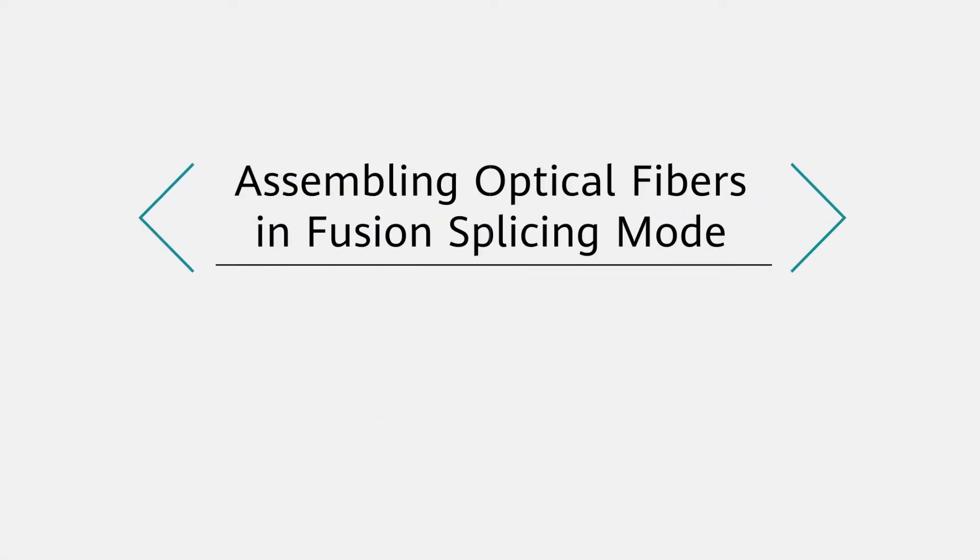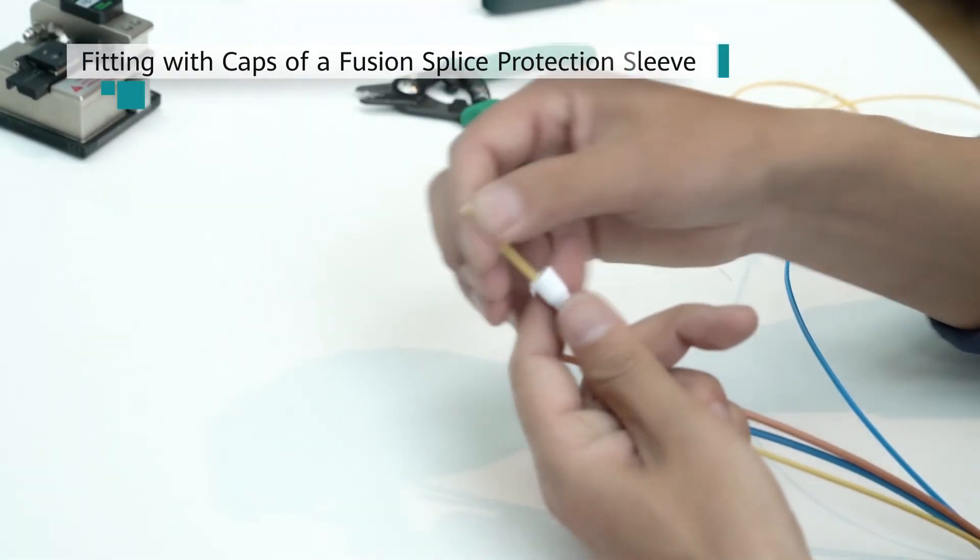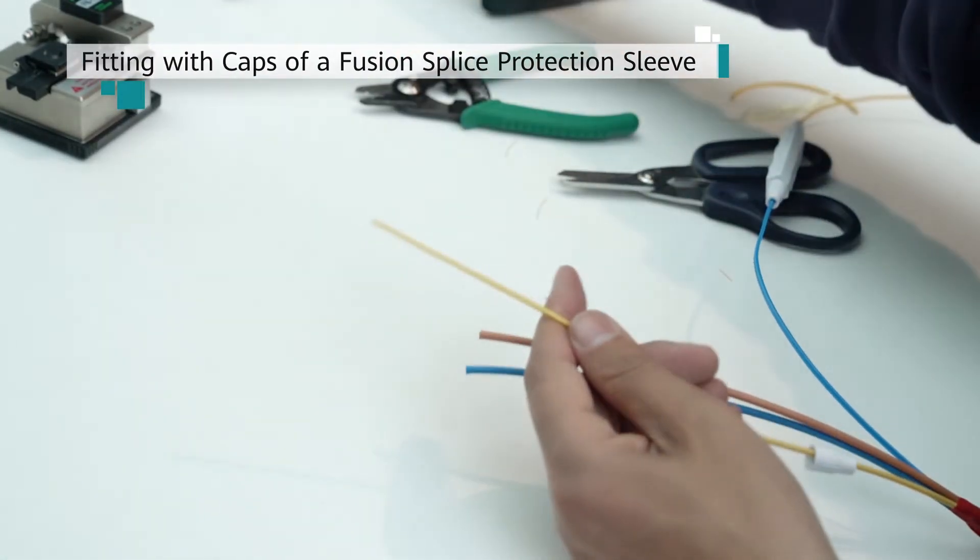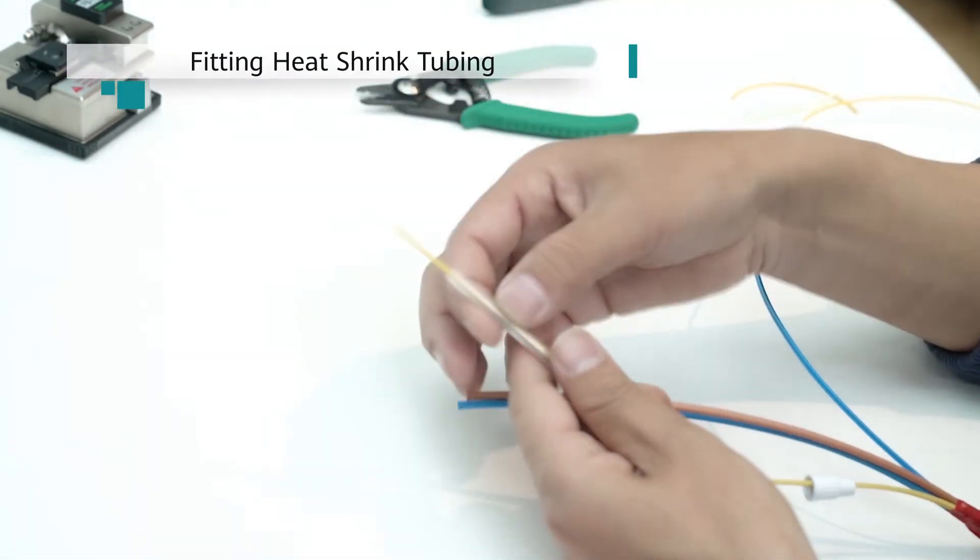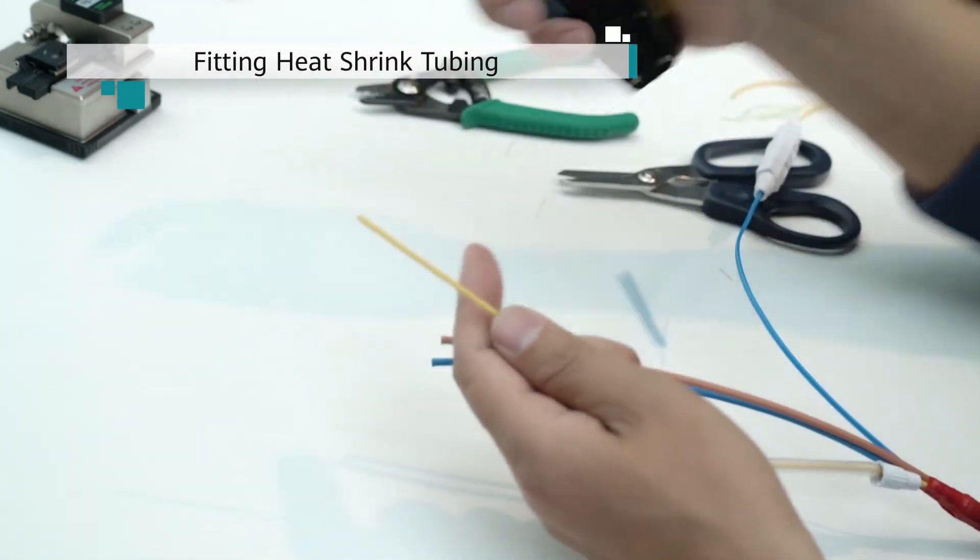Assembling optical fibers in fusion splicing mode. An optical fiber can also be assembled in fusion splicing mode. Feed one end of an optical fiber and one end of a pigtail through the caps of a fusion splice protection sleeve. Additionally, feed the optical fiber or pigtail through 60 mm of heat shrink tubing.